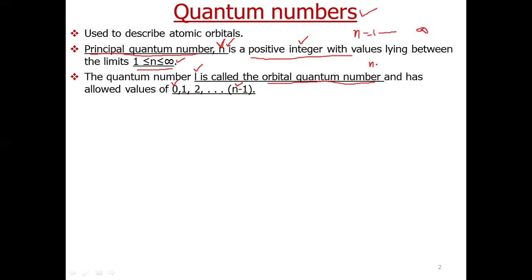For example, suppose n is 4. Then n−1 is 3. So the value of l starts from 0 and we keep adding 1: 0, 1, 2, 3. So l can have 4 values when n is equal to 4.